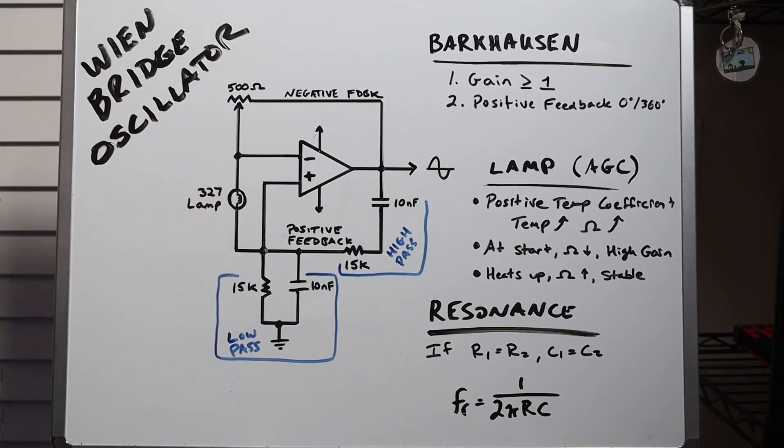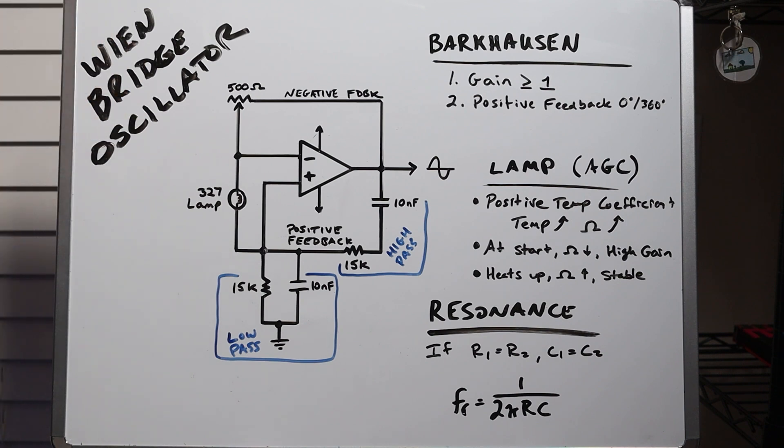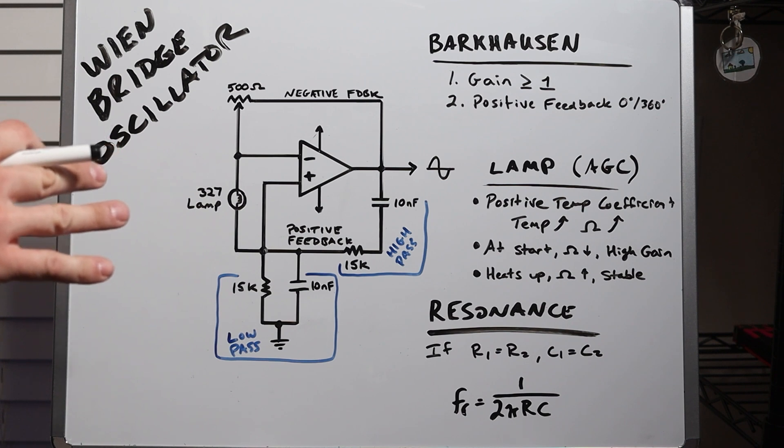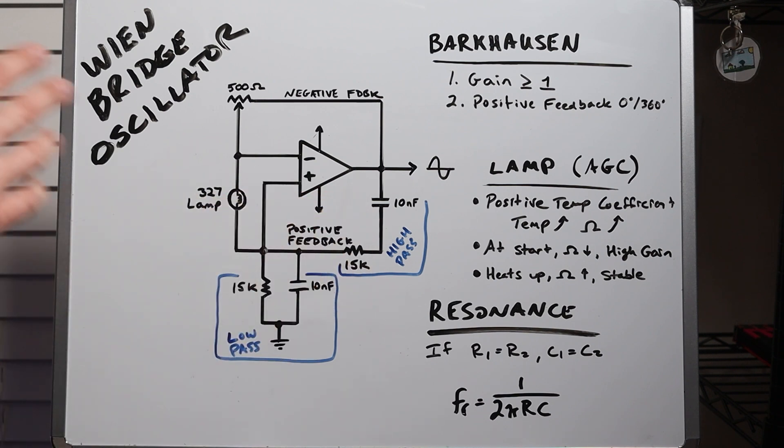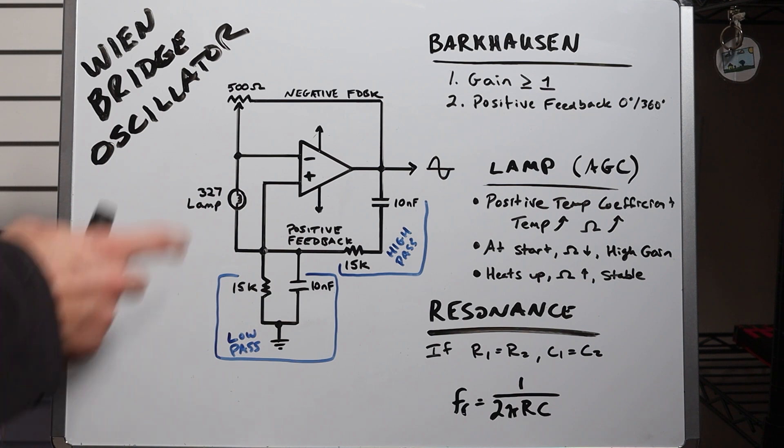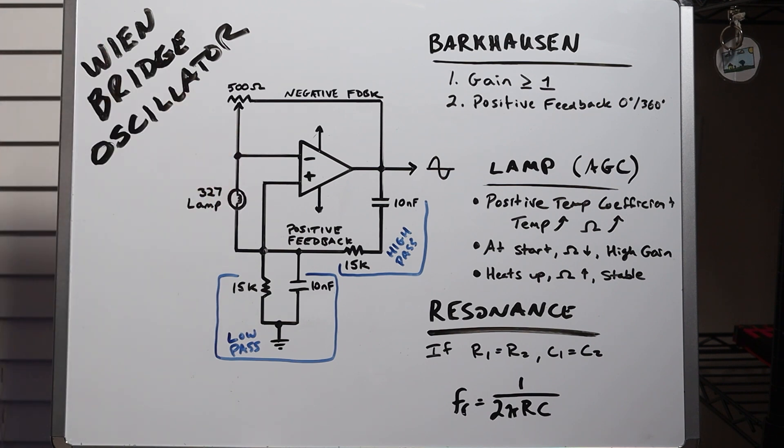All right, here's the schematic of what we're going to build today. So I pronounce it Wayne Bridge Oscillator, but I know technically it's probably Wien Bridge Oscillator. So leave a comment and let me know how you pronounce it. So the original circuit that was in the Stanford thesis was built around tube amplifiers. We still have the same feedback network like that system, but instead Jim Williams came up with the design that used an op amp. And this is the circuit that we're going to build today.